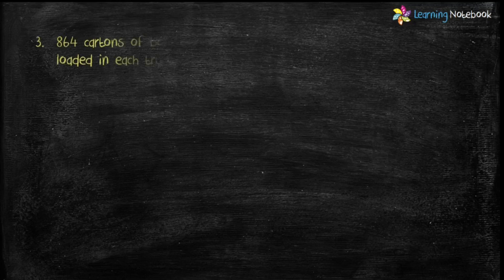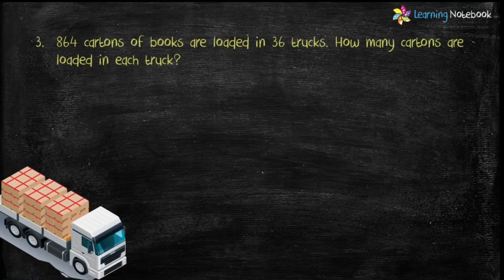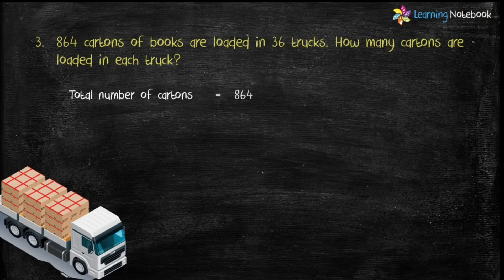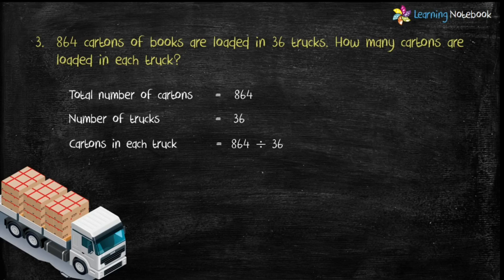Now let's solve question number 3. 864 cartons of books are loaded in 36 trucks. How many cartons are loaded in each truck? Let's write the statements first. Total number of cartons equals 864. Number of trucks equals 36. Therefore, cartons in each truck equals 864 divided by 36.